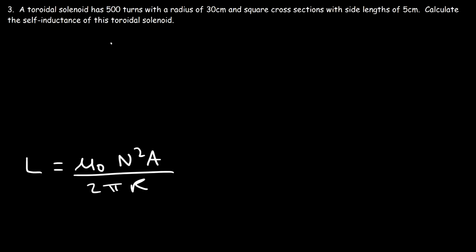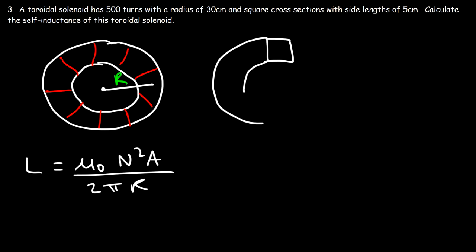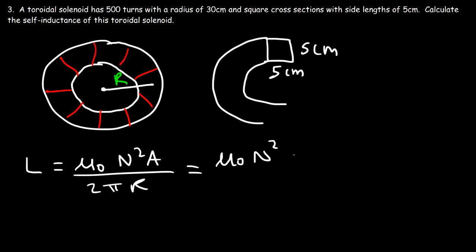The toroidal solenoid is basically a solenoid with wires wrapped around a donut-shaped material — we assume air-filled since no material was specified. The radius is capital R, and the cross-sectional area is a square with side lengths of 5 by 5 centimeters. The formula becomes mu-zero N squared times S squared divided by 2 pi R.